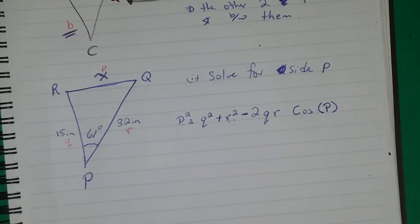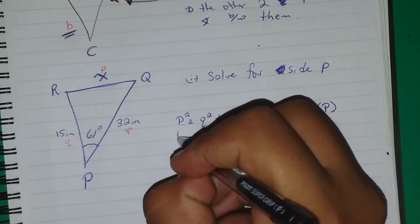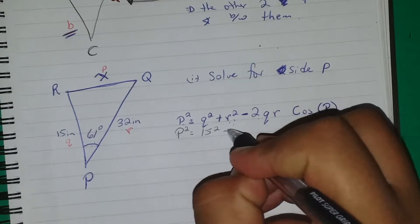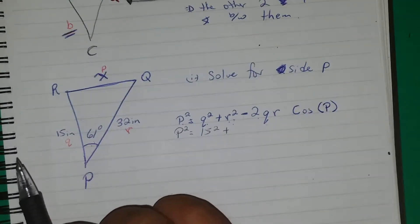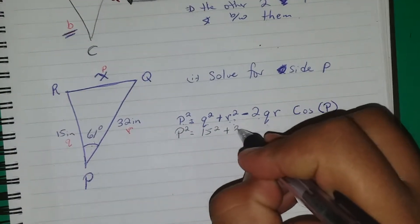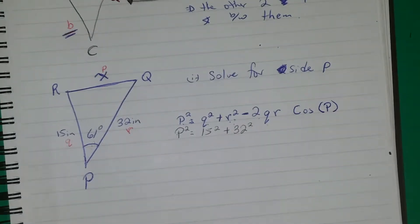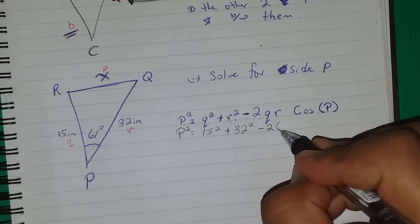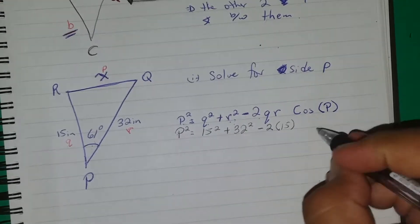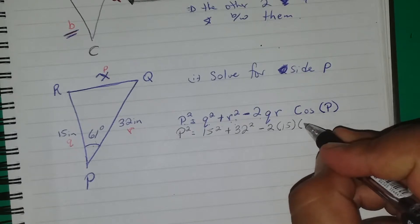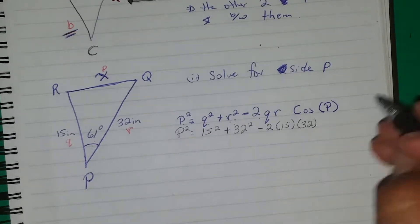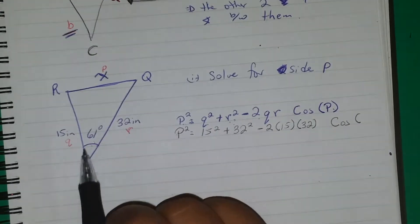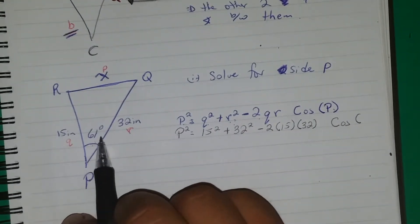Continuing to solve: P squared equals Q squared plus R squared minus 2QR cosine of angle P. Substituting the values, Q is 15, so we have 15 squared; R is 32, so 32 squared; minus 2 times 15 times 32; and cosine of angle P, which is 61 degrees.